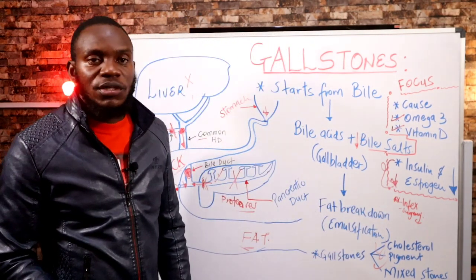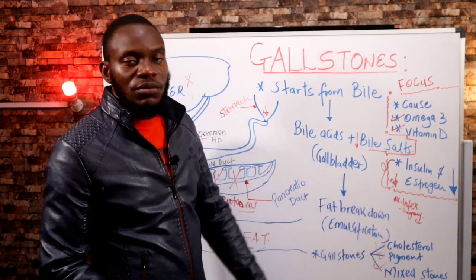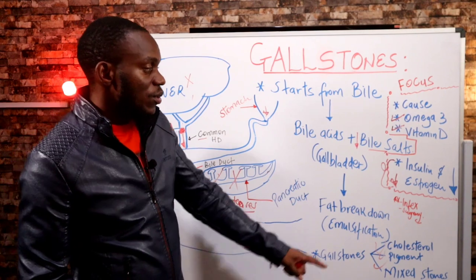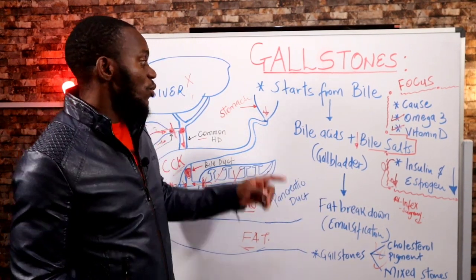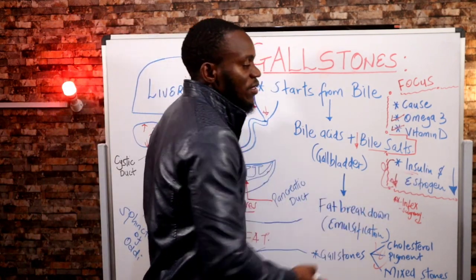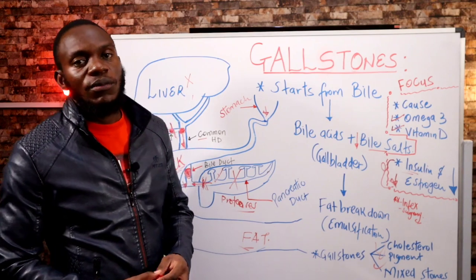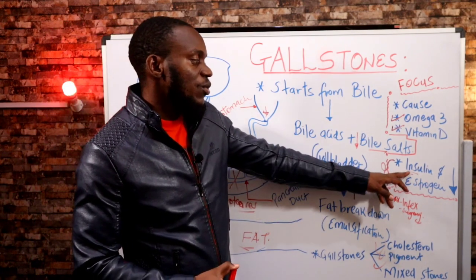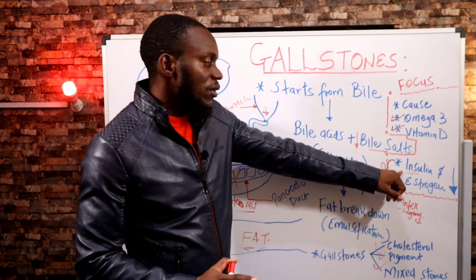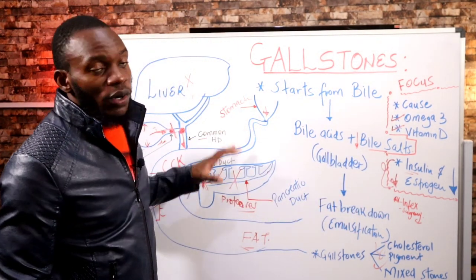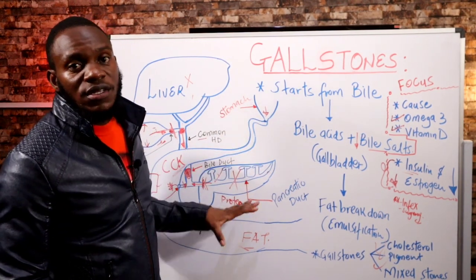Estrogen is also mimicked by GMO products, so it is important to drop GMO and wheat products to avoid high estrogen exposure. Finally, lower insulin by dropping simple carbohydrates — high carbohydrate intake causes insulin spikes. If you lower insulin, you lower your chances of getting these conditions, and if you already have them, they start to disappear. This concludes the explanation of gallstones.